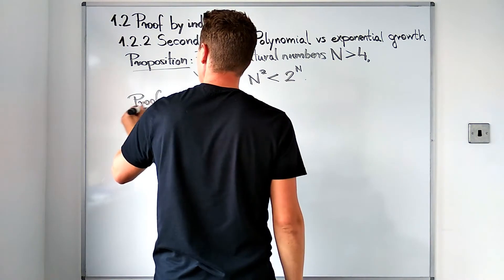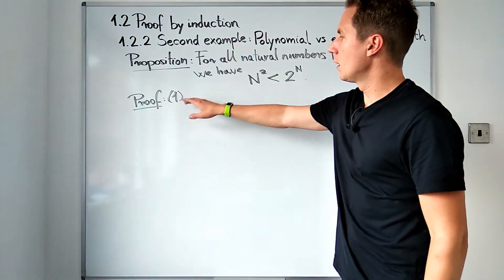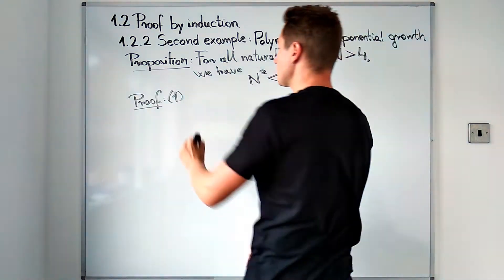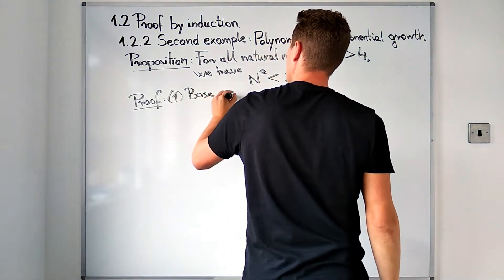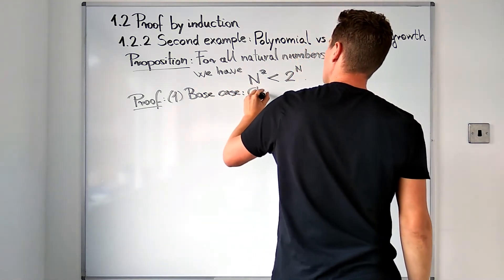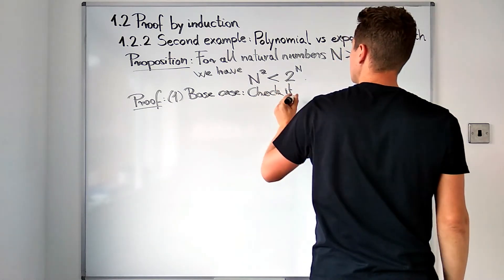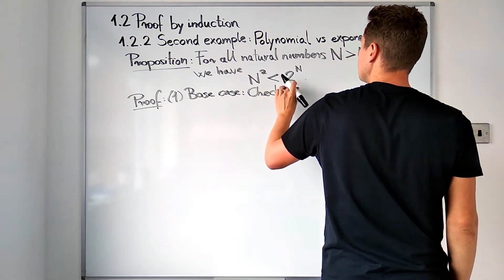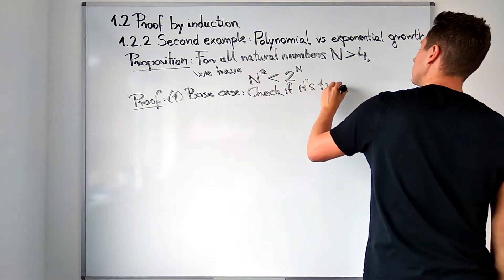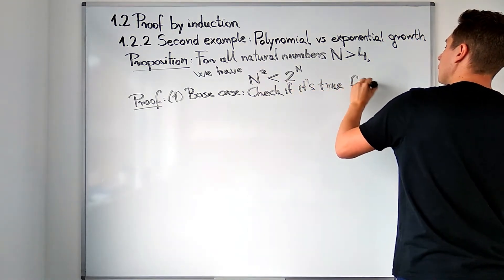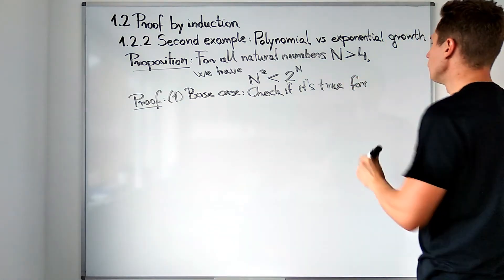Our proof will follow the usual recipe of three steps. The first step being the base case, which means that we check the statement, check if it's true for the smallest case possible.